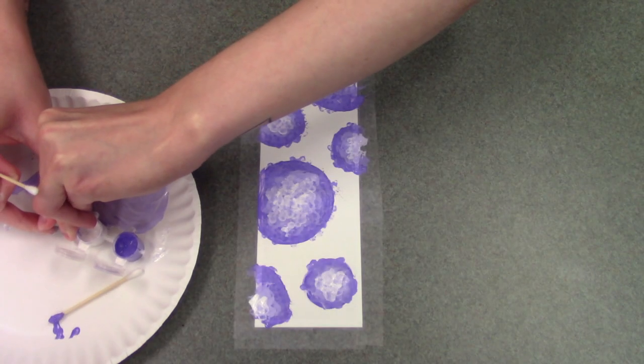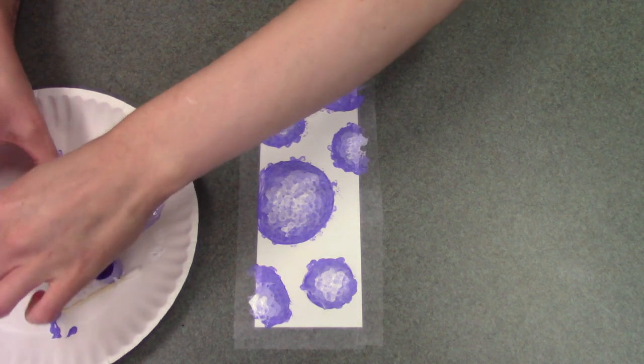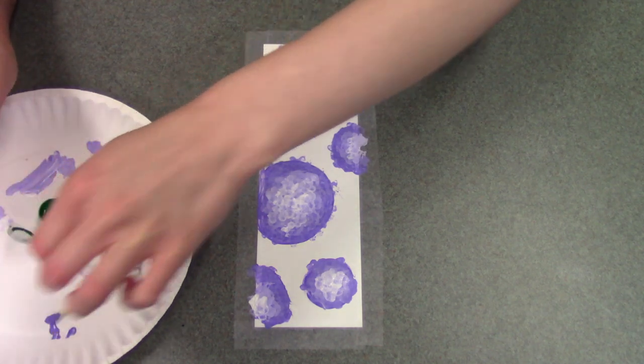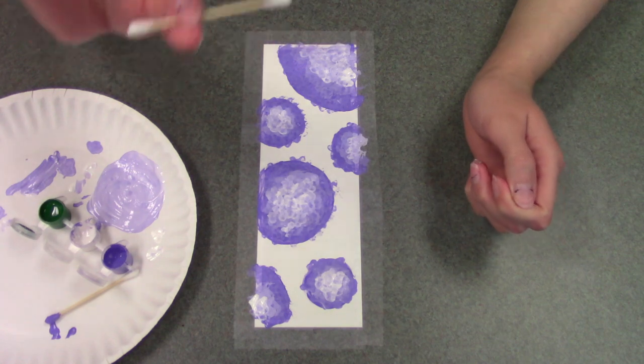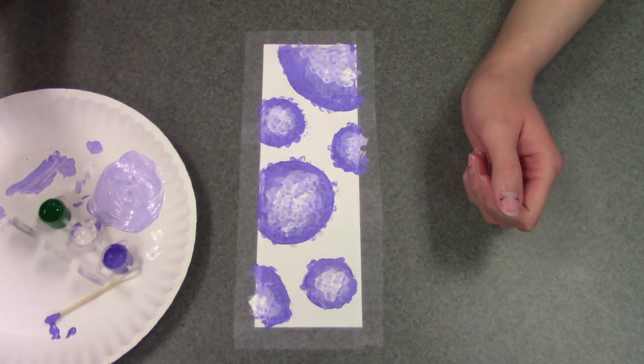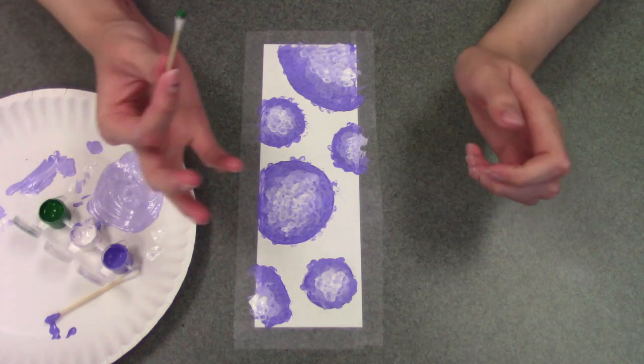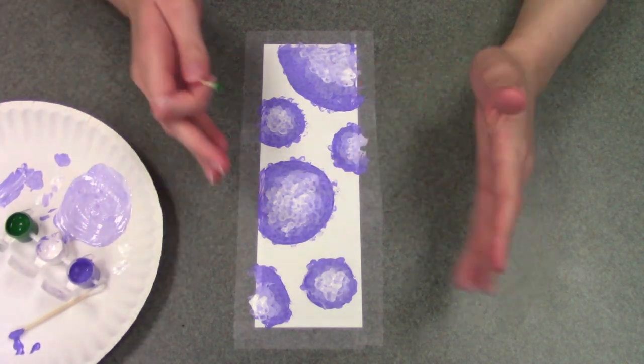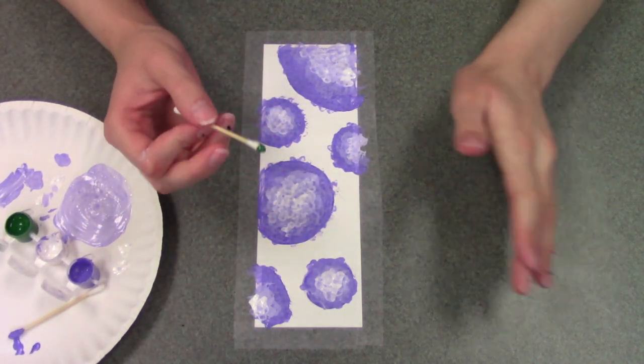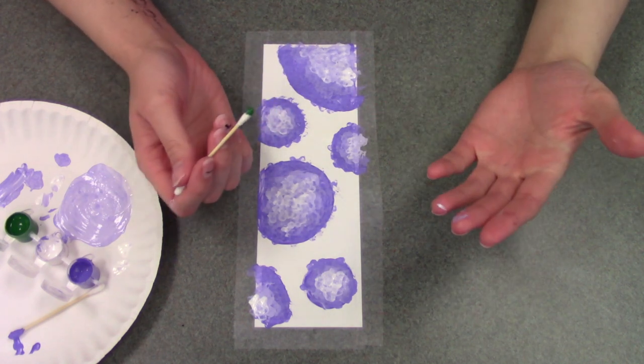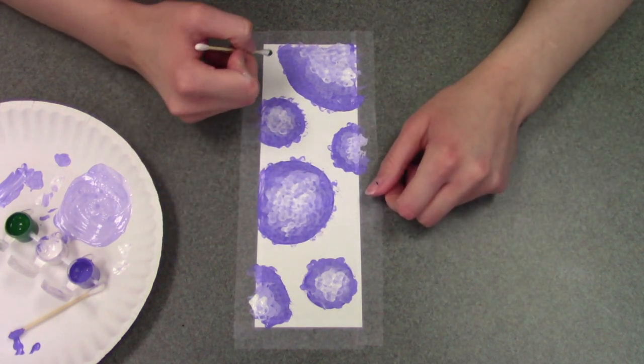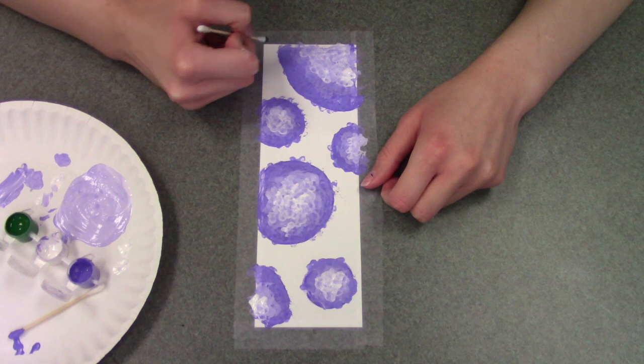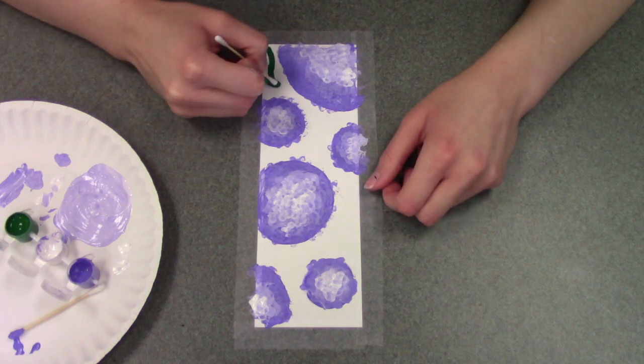Alright, so the last thing you're going to do once your flowers are completely done is you're going to use the second singular q-tip that you pulled out in the beginning. And then you're just going to finally pop open your green paint and what you're going to do with this is just kind of put leaves or stems anywhere that you want to. So I'm just going to dip this one in the green and just kind of put the leaves wherever I want to.